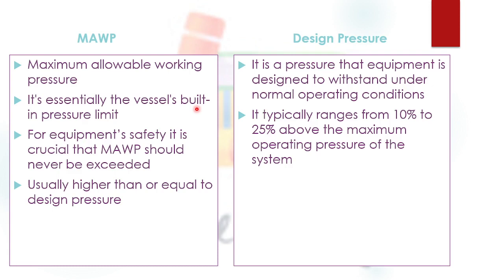The design pressure is 125 psig, but because the equipment is actually built with a 6 mm thickness, the maximum pressure it can withstand is based on that 6 mm plate — and that would be higher than the design pressure. So the maximum allowable working pressure of that equipment, built with 6 mm thickness, is, for example, 135 psig.